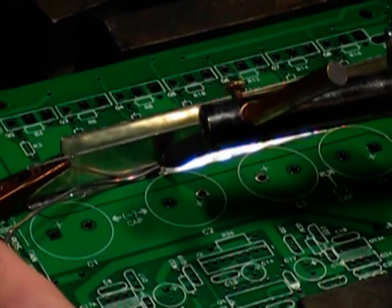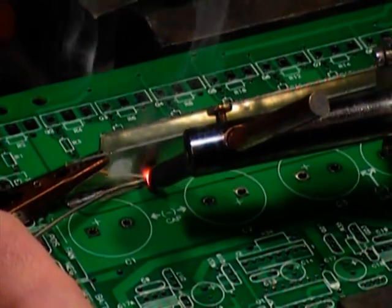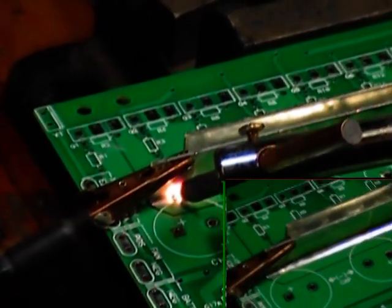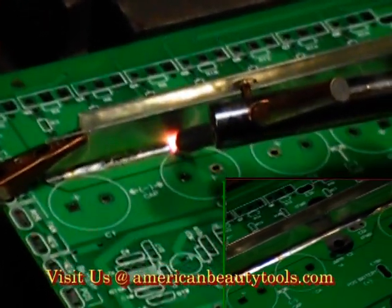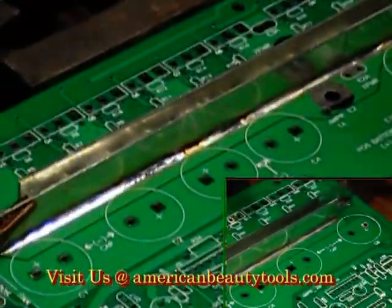This ability to produce, control, and direct a significant amount of heat specifically where it is required should make resistance soldering your method of choice, especially when you are trying to overcome the high heat sinking properties of applications like the one presented here. You will find videos relating to other soldering methods by visiting us online at AmericanBeautyTools.com.